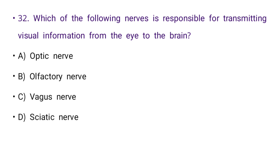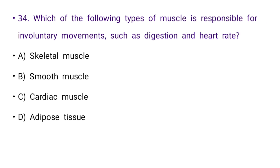Next: Which of the following types of muscle is responsible for involuntary movements such as digestion and heart rate? Options: skeletal muscle, smooth muscle, cardiac muscle, or adipose muscle. The right answer is B: smooth muscle.